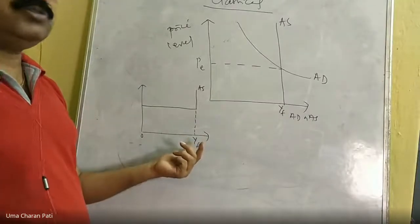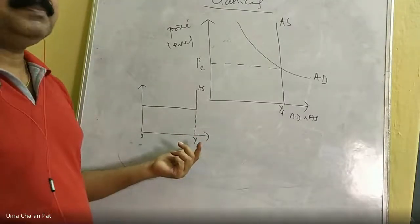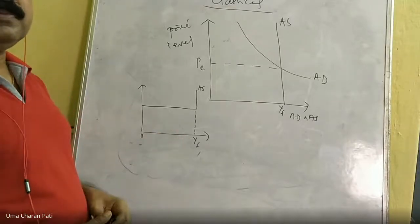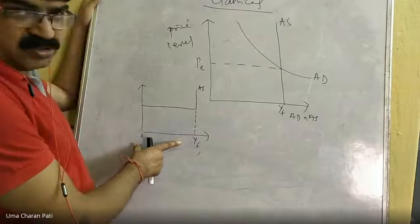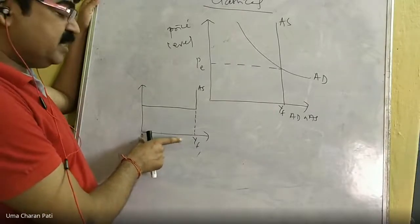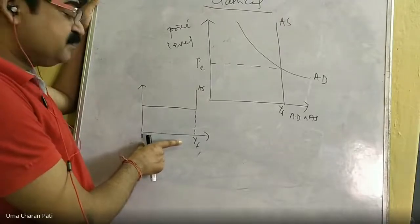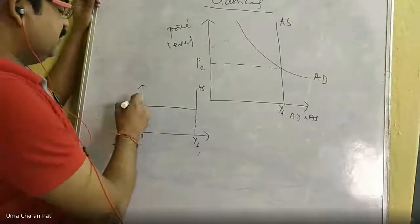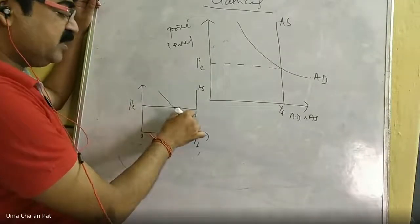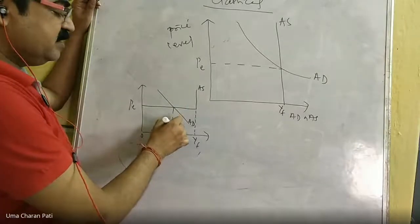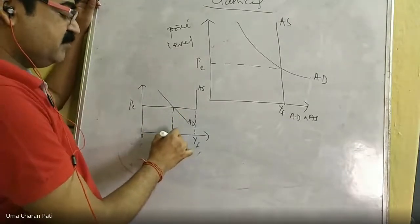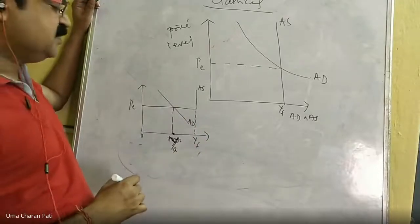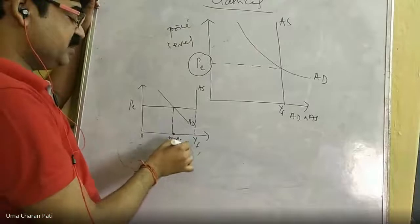This is called under-employment equilibrium. Since price is already decided in the Keynesian system, what remains to be decided is aggregate output. By drawing the aggregate demand curve, we decide the equilibrium level of output YA — the actual output. So in the classical theory, price is to be decided; in the Keynesian theory, output is to be decided.